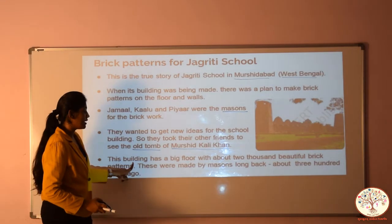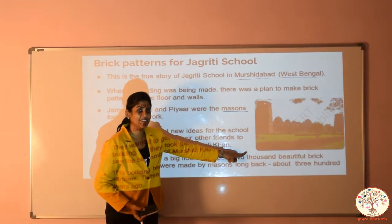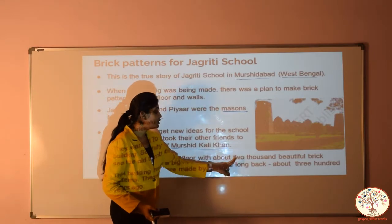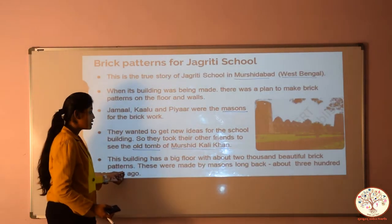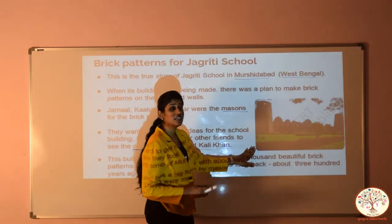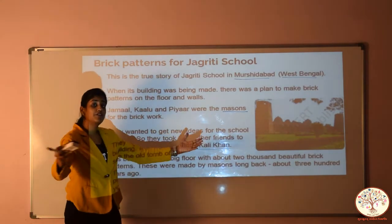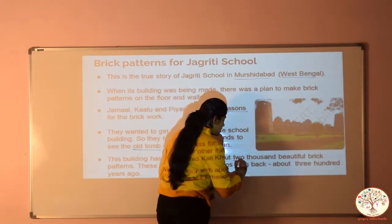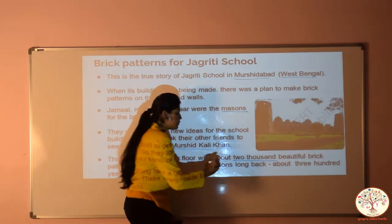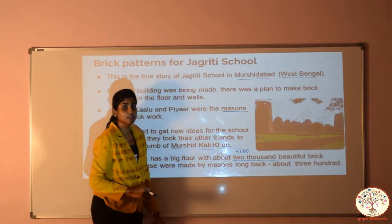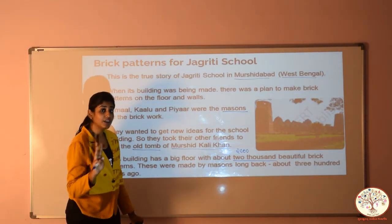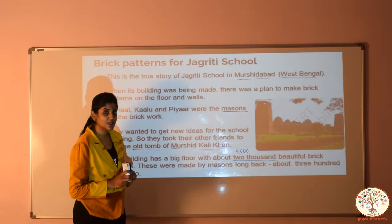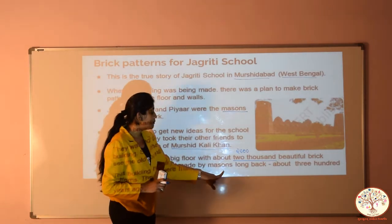Let's read further. This building — which building? This old tomb of Murshid Kali Khan — has a big floor with about 2000 beautiful brick patterns. एक बहुत ही बड़ा floor है जहाँ पे 2000 beautiful brick patterns हैं. Can you imagine? 2000 brick patterns — not 1, not 2, not 3, it is in thousands. कितने सारे ideas मिले होंगे masons को.